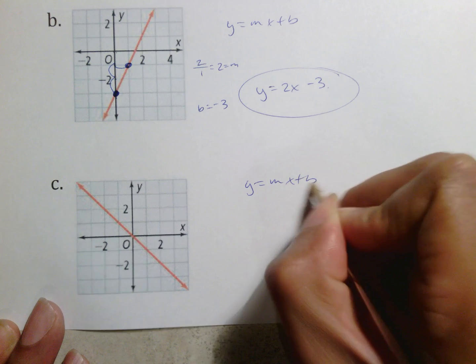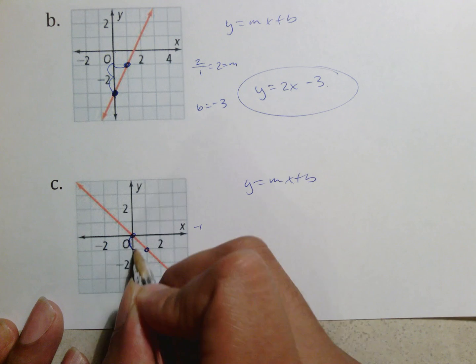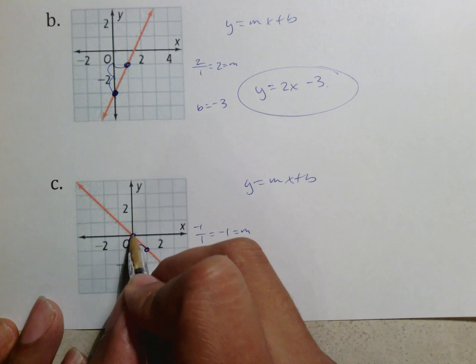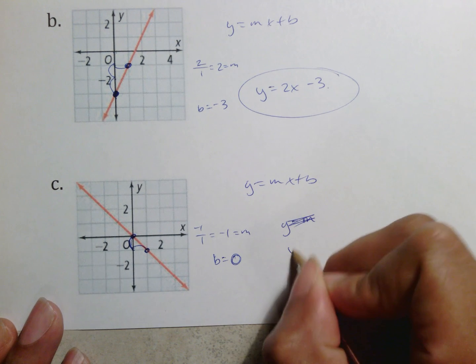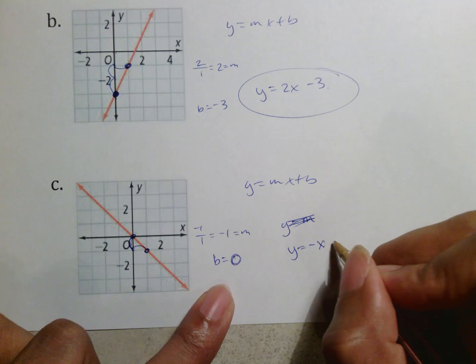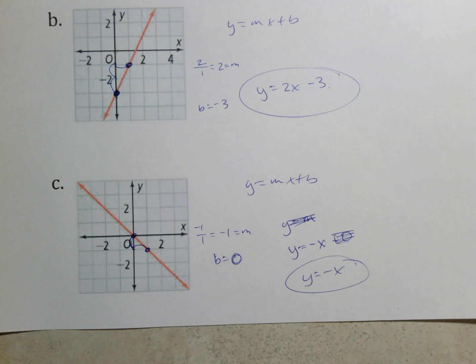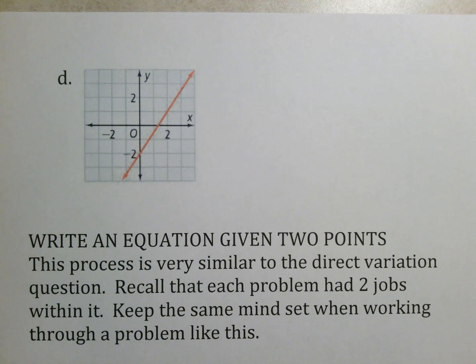Example c: y equals mx plus b. Two good points — there are plenty. My rise is negative 1, my run is 1, which means negative 1 is my slope. My y-intercept crosses at 0, so b is 0. You might think y equals negative x plus 0, but we don't write plus 0, so the actual answer is y equals negative x. Don't put negative 1x — I'll count it right on a quiz, but MathXL might mark it wrong, so be careful.